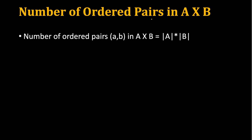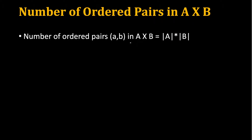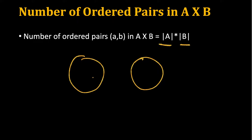How do we find the number of ordered pairs that are possible? We saw that A had three elements and B had two elements, and we got six. So we multiply the cardinality of these two sets. Remember that cardinality is the number of elements in a set.